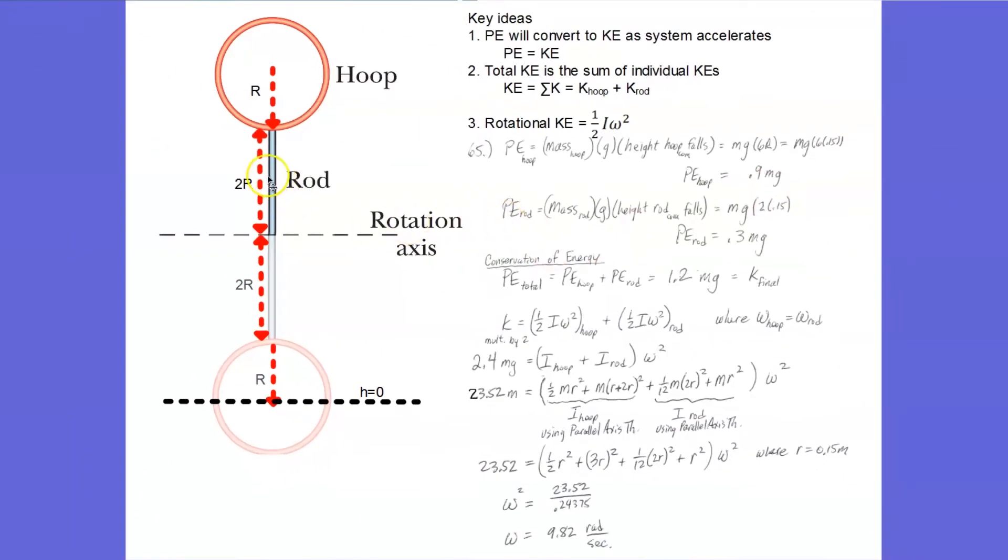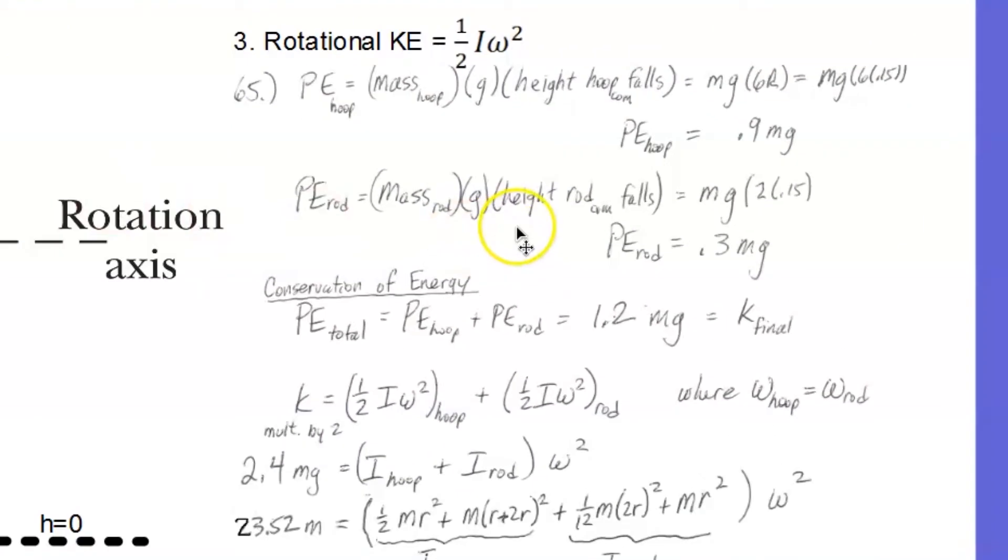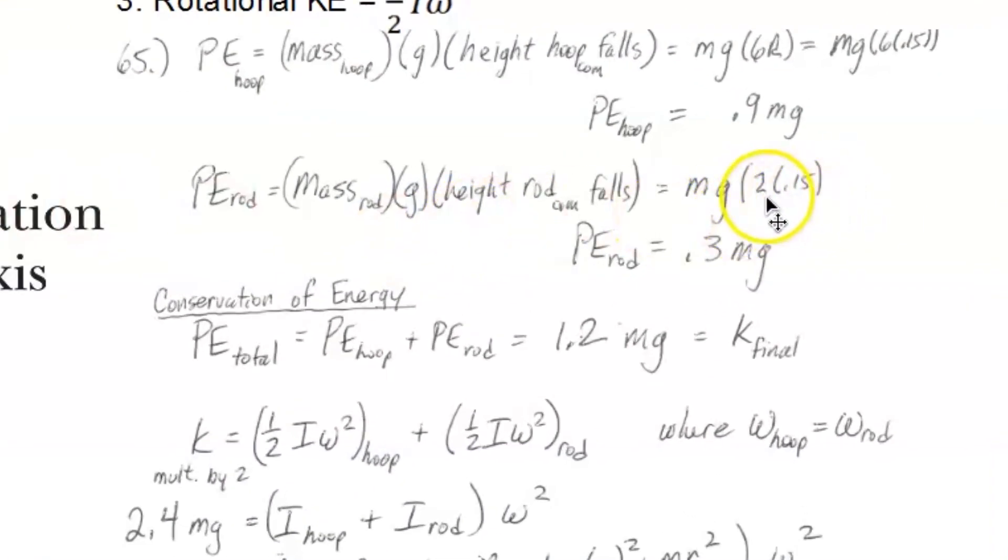Now the rod, its center of mass is right here at the top of the swing, and its center of mass is right here at the bottom of the swing. So that is r plus r, or a height of 2r. So there is my height, 2 times r, 0.15. And so the potential energy of the rod then is 0.3 mg.